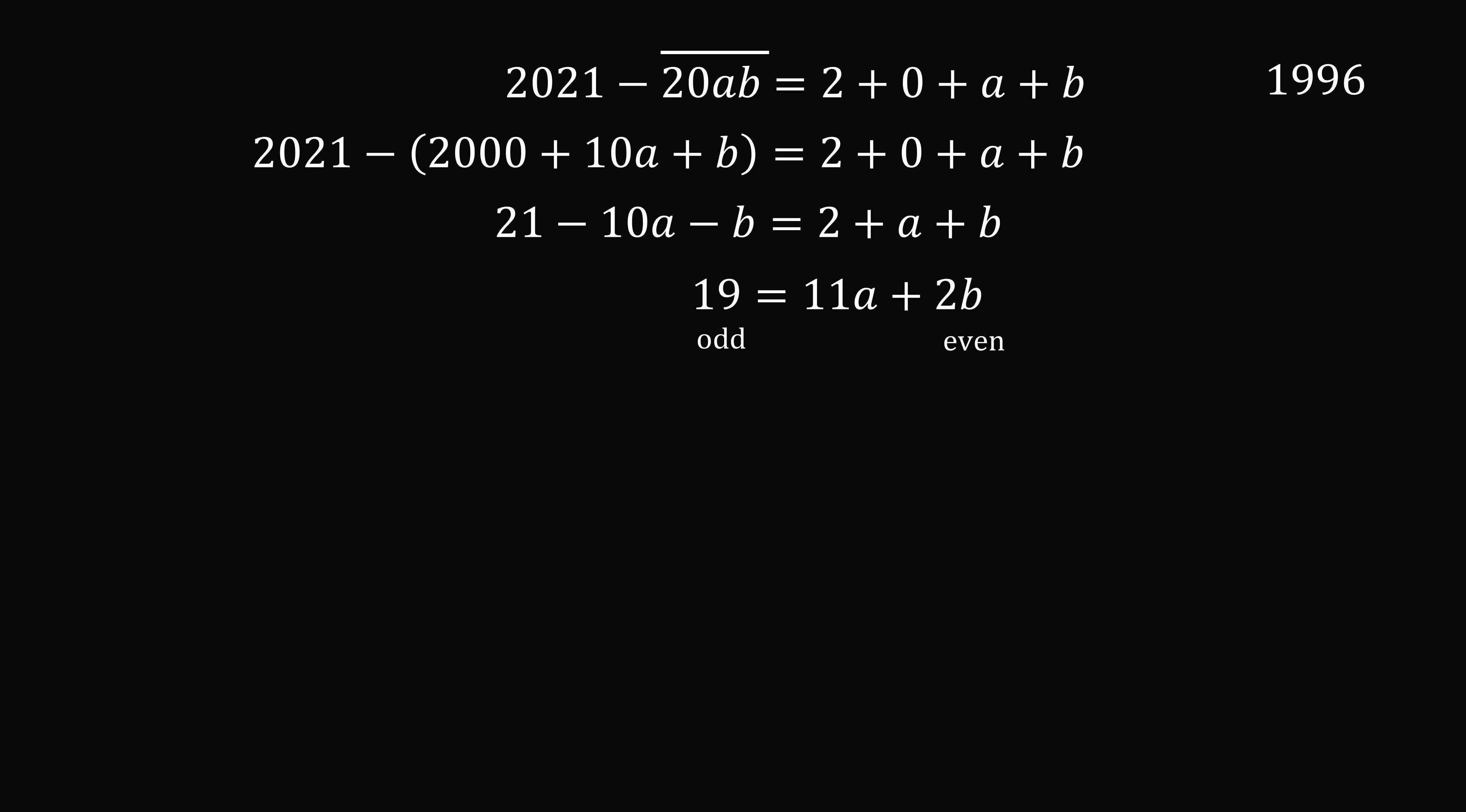19 is odd. 2b is even, which means 11a has to be odd. So, for 11a to be odd, we basically have one possibility, because 11 times 3 is equal to 33. That's too large. So, we're going to need 11a to be equal to 11. So, a is equal to 1. Then, 19 minus 11 is equal to 8. That's equal to 2b, giving that b is equal to 4. And this gives a solution of 2014.